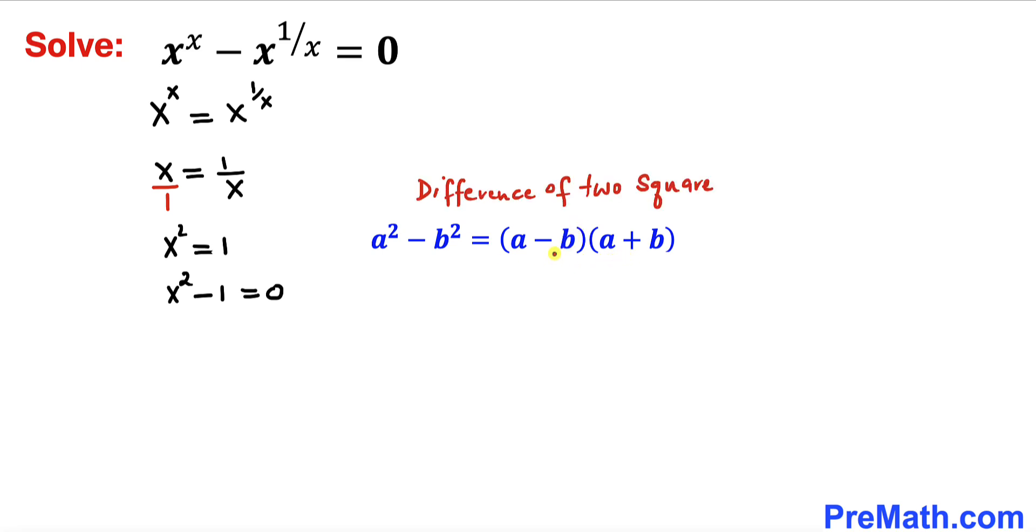And by the way, this kind of identity is called difference of two squares. Here in our case, this 1 could be written as 1 square. It doesn't make any difference whatsoever.